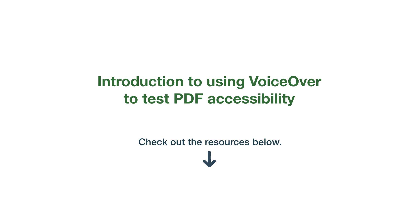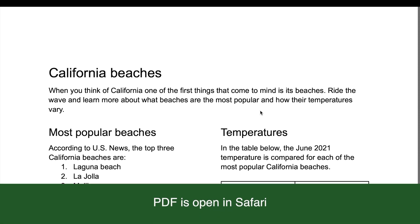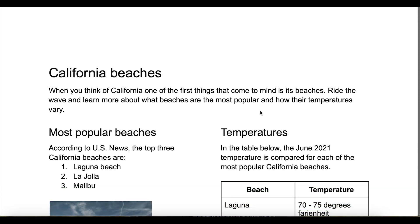In this video, we'll introduce how to use Mac's VoiceOver screen reader to do a few accessibility tests on a PDF. Check out the video below to learn more about how to set up VoiceOver for the first time. This is a PDF I made in Google Docs and then downloaded as a PDF. I even had Adobe Acrobat auto-tag it. The PDF is open in Safari — I found that VoiceOver worked better when I opened the PDF in Safari versus Adobe Acrobat.